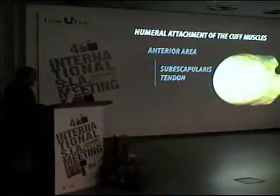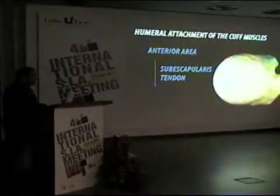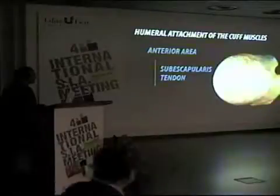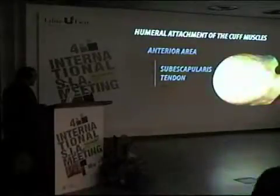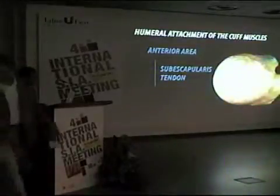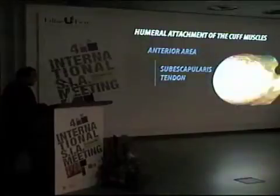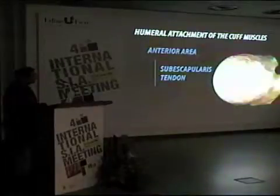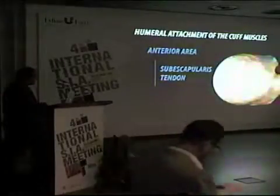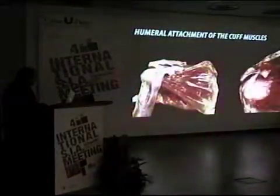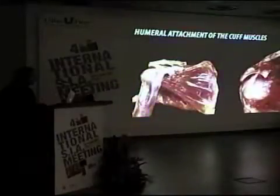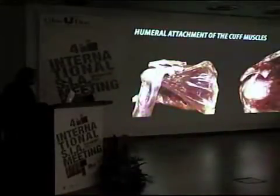We divide the attachment of the cuff in the proximal humerus into three insertion areas. The subscapularis tendon attaches in the anterior area in the lesser tuberosity. The lesser tuberosity and the attachment of this muscle are covered by the anterior lamina.